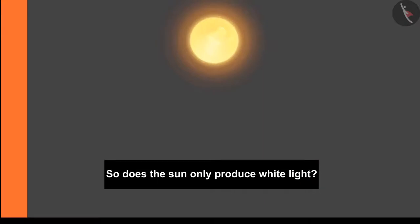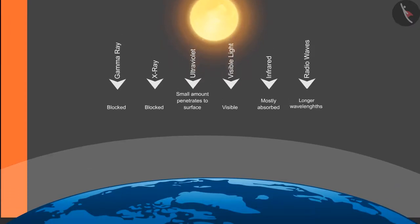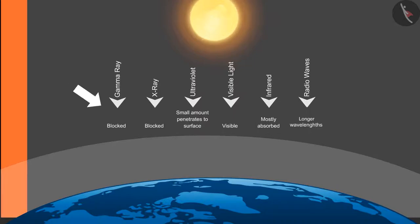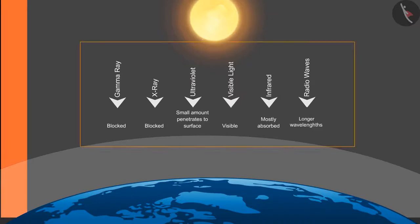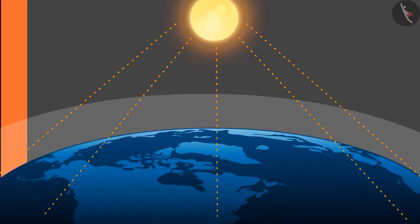Does the Sun only produce white light, or is there anything else we cannot see? Yes — the Sun produces electromagnetic waves ranging from radio rays to gamma rays, and every beam has its own wavelength. Some of them get stopped in the atmosphere and some reach the Earth. We can only see the spectrum of visible white light with our naked eyes; we will study these waves in detail in higher classes.